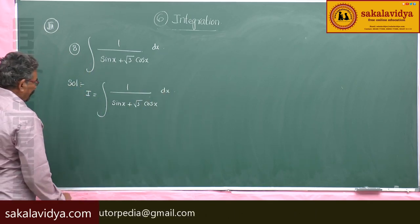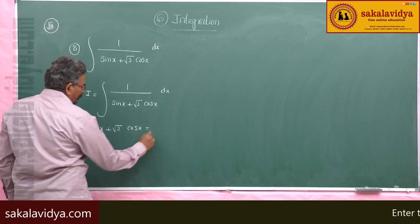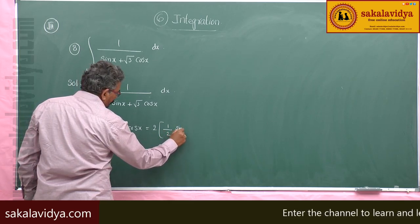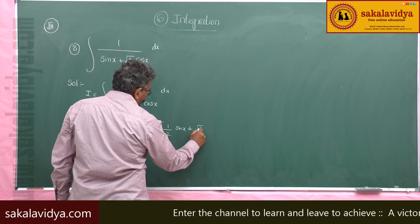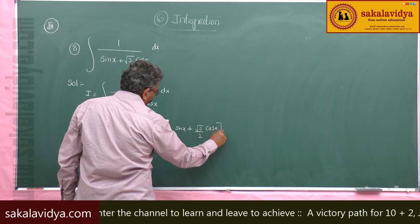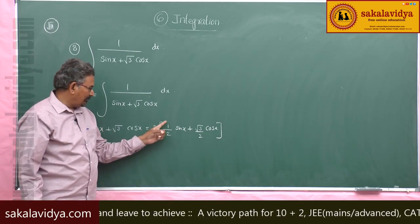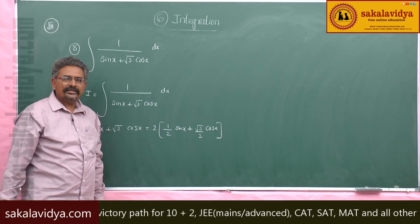Now, sin x + √3 cos x can be written as 2 times (1/2 · sin x + √3/2 · cos x). From trigonometric ratios, 1/2 is cos 60° and √3/2 is sin 60°.